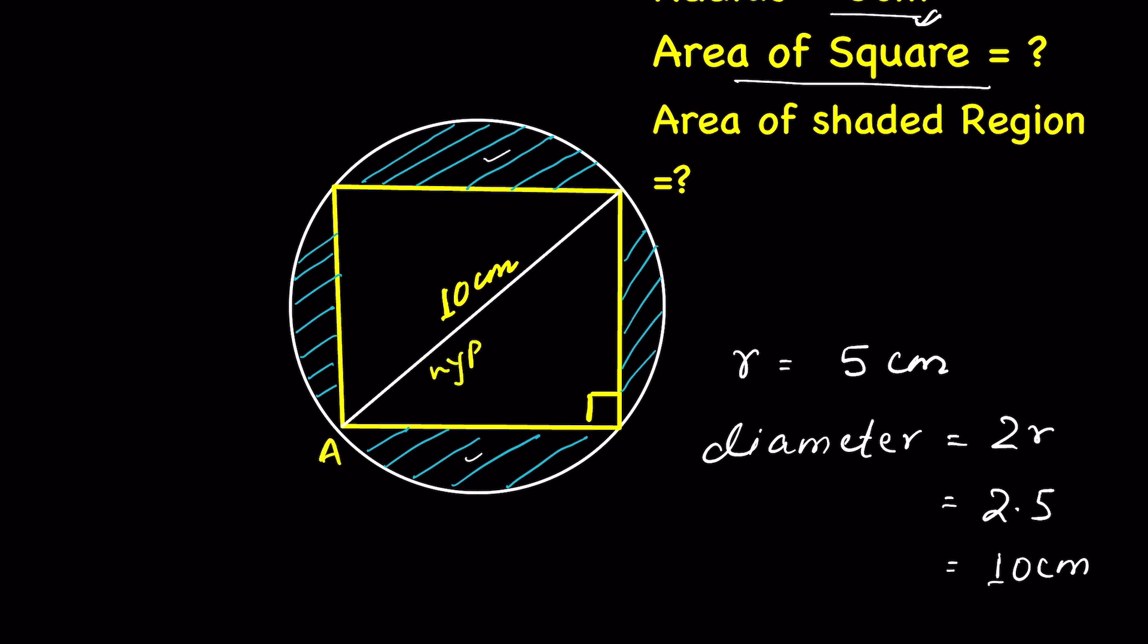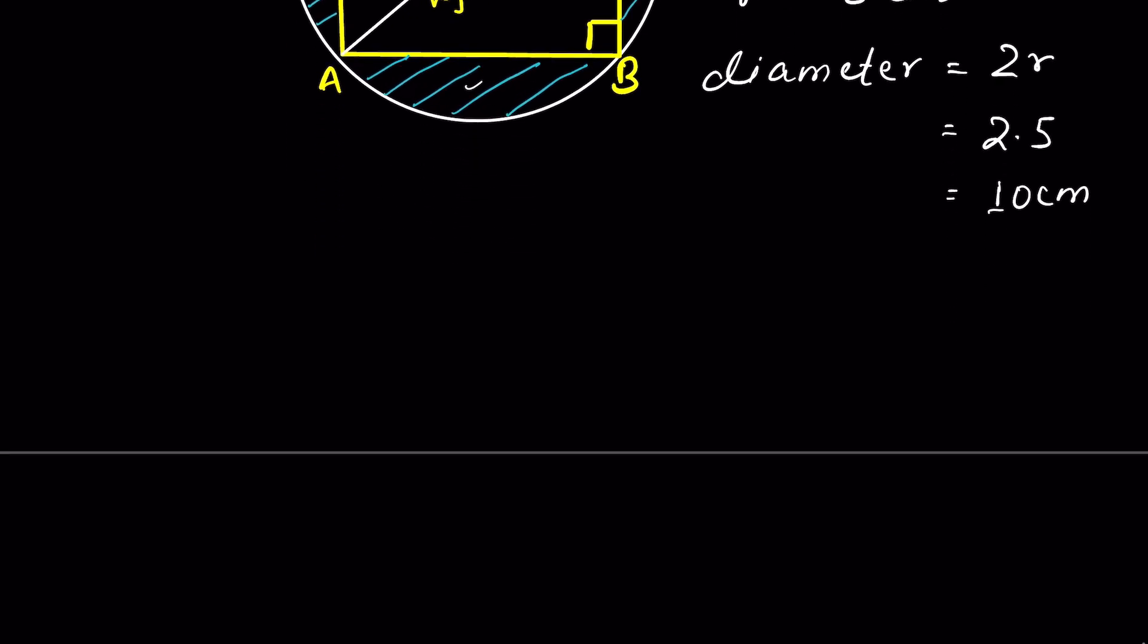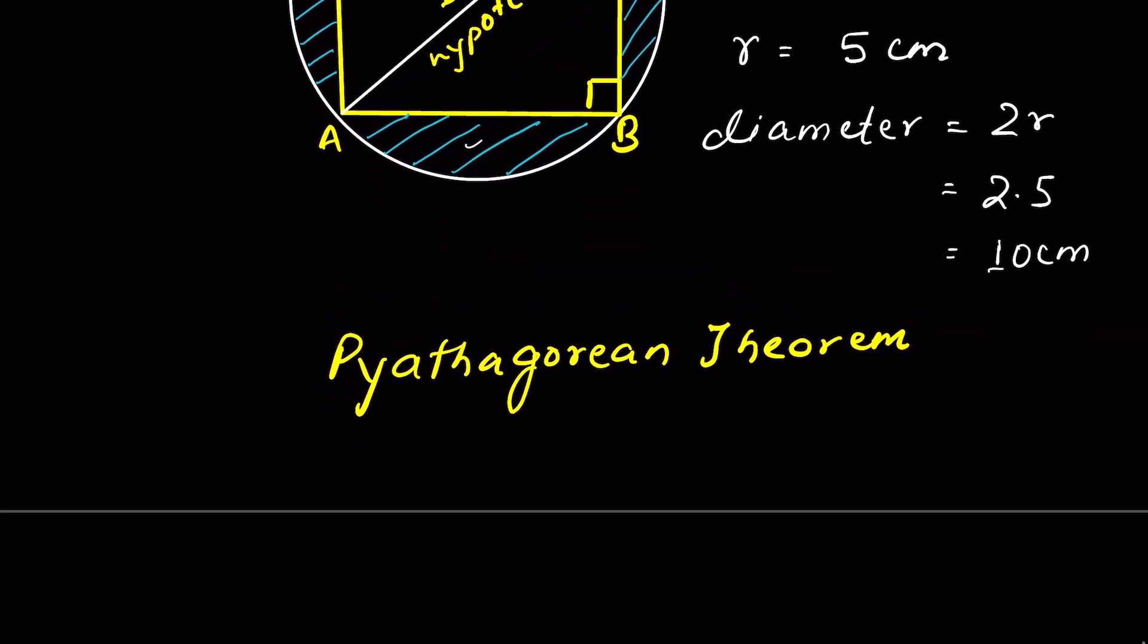Let's say the square is A, B, C, D. So side AC is the hypotenuse. Now, from the Pythagorean theorem, hypotenuse square, that means AC square,